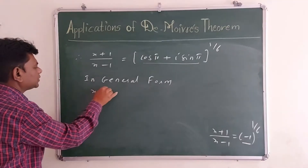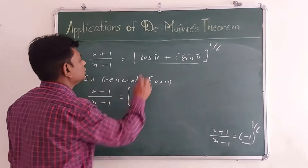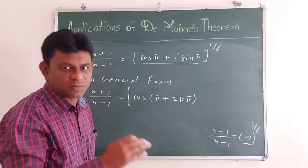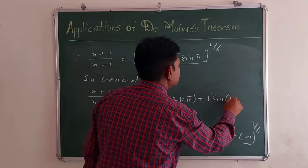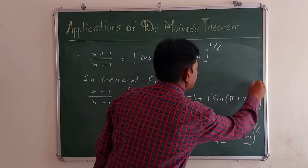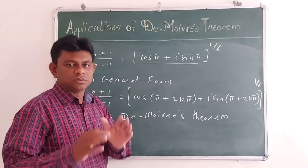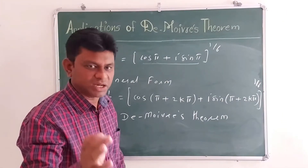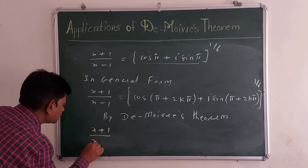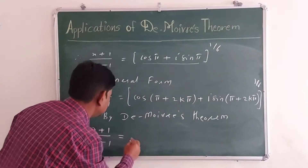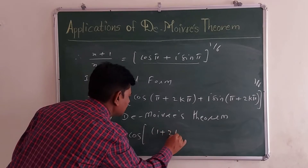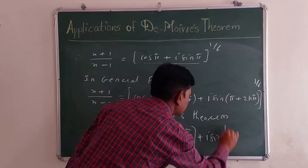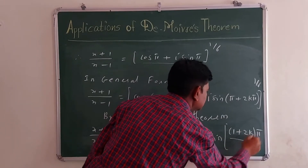In general form, (x+1)/(x-1) = cos(π + 2kπ) + i sin(π + 2kπ), raised to the power 1/6. By applying De Moivre's theorem — cos θ + i sin θ raised to n equals cos(nθ) + i sin(nθ) — the answer is cos((1+2k)π/6) + i sin((1+2k)π/6).